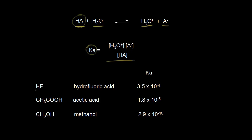So here we have three weak acids: hydrofluoric acid, acetic acid, and methanol. Over here are the Ka values. Hydrofluoric acid has the largest Ka value, so even though they're all considered to be weak acids, 3.5×10⁻⁴ is larger than 1.8×10⁻⁵. So hydrofluoric acid is stronger than acetic acid, and acetic acid is stronger than methanol, but they're all considered to be weak acids relative to the stronger ones.